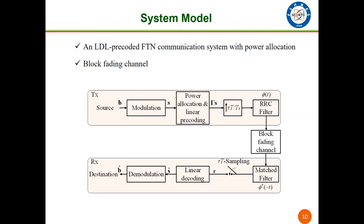At the receiver side, after the matched filter and tau T sampling, the received signal R is obtained. After the linear decoding, we obtain the estimate of the symbol vector.